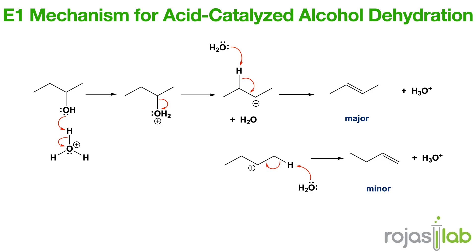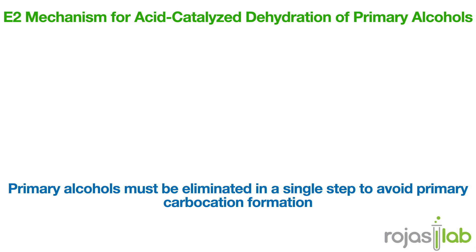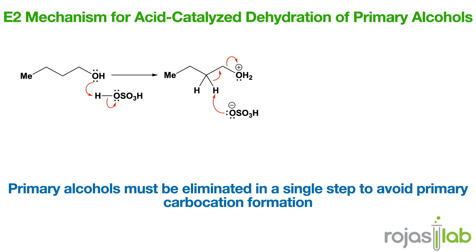We can also do E2 reactions — acid-catalyzed dehydration of primary alcohols. Here, primary alcohols undergo concerted elimination since they can't form stable carbocations. In the first step, we protonate the hydroxyl group to make it a better leaving group. Next, a base abstracts the beta hydrogen, and water leaves simultaneously, resulting in alkene formation. This E2 pathway avoids unstable carbocations and requires strong acid and heat.